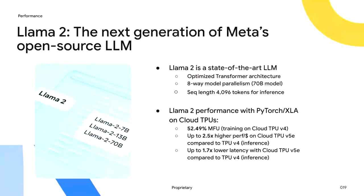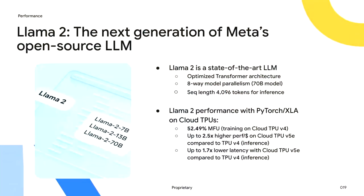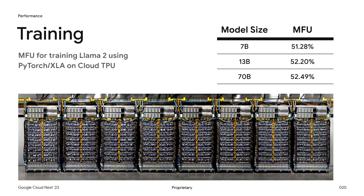After you train or fine-tune Llama 2, you'll want to run inference on it. On inference, Cloud TPUs achieved up to 2.5 times greater performance per dollar and up to 1.7 times latency speedup compared to the previous generation Cloud TPU v4. Those are amazing numbers. How is this possible? The magic comes from combined hardware and software optimizations. Let's take a closer look. When it comes to training performance, we use the industry standard metric of model flop utilization, or MFU — measuring how effectively the model uses the actual underlying hardware during training.